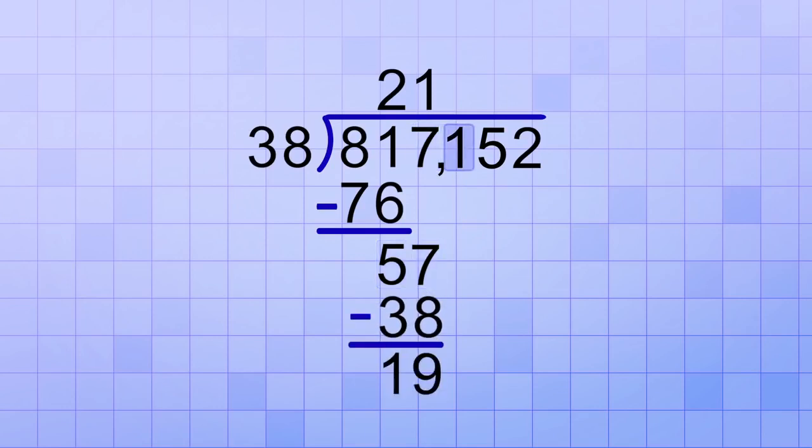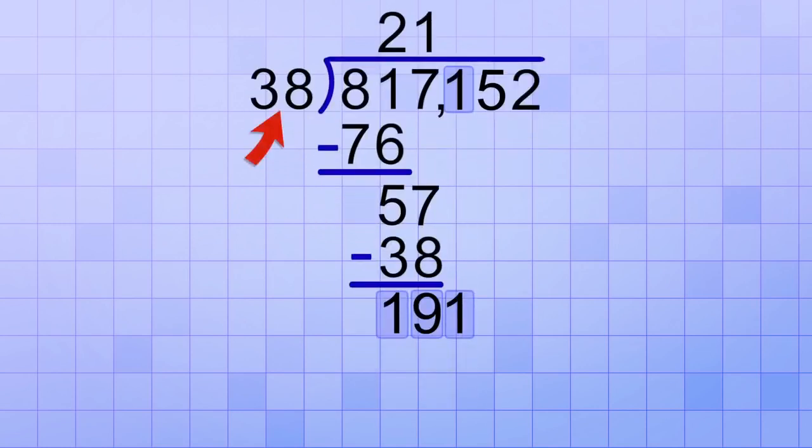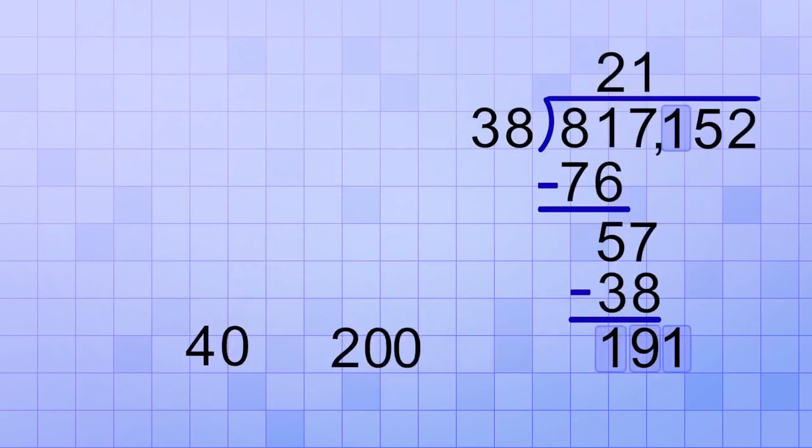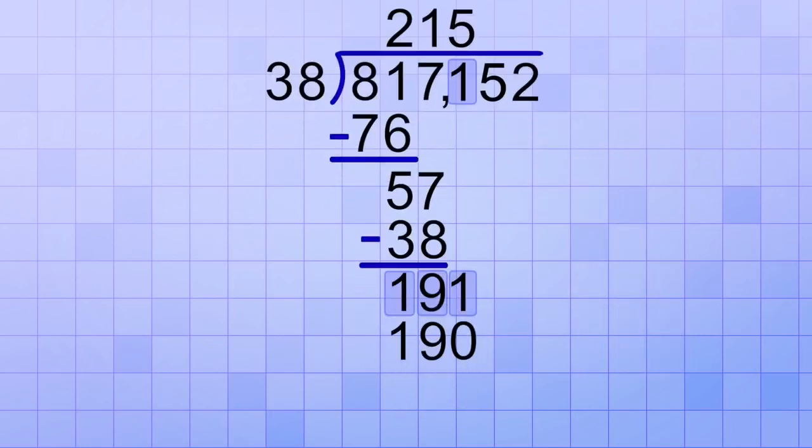On to the next digit. We bring down a copy of the 1, and now we ask, how many 38s will it take to make 191? That's a bit tougher. To estimate, I'll round those numbers to 40 and 200. And I know that 5 40s makes 200, so 5 is my estimate for the next answer digit. 5 times 38 equals 190. And 191 minus 190 leaves a remainder of 1.